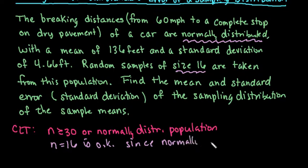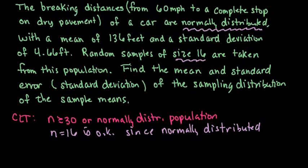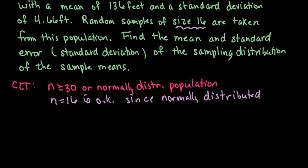If you start with something that is not normally distributed, you absolutely cannot use the central limit theorem with a small sample size. The central limit theorem tells us that the distribution of the sample means — if you were to take all the means of samples of this size and make a distribution — is going to approach the normal model.